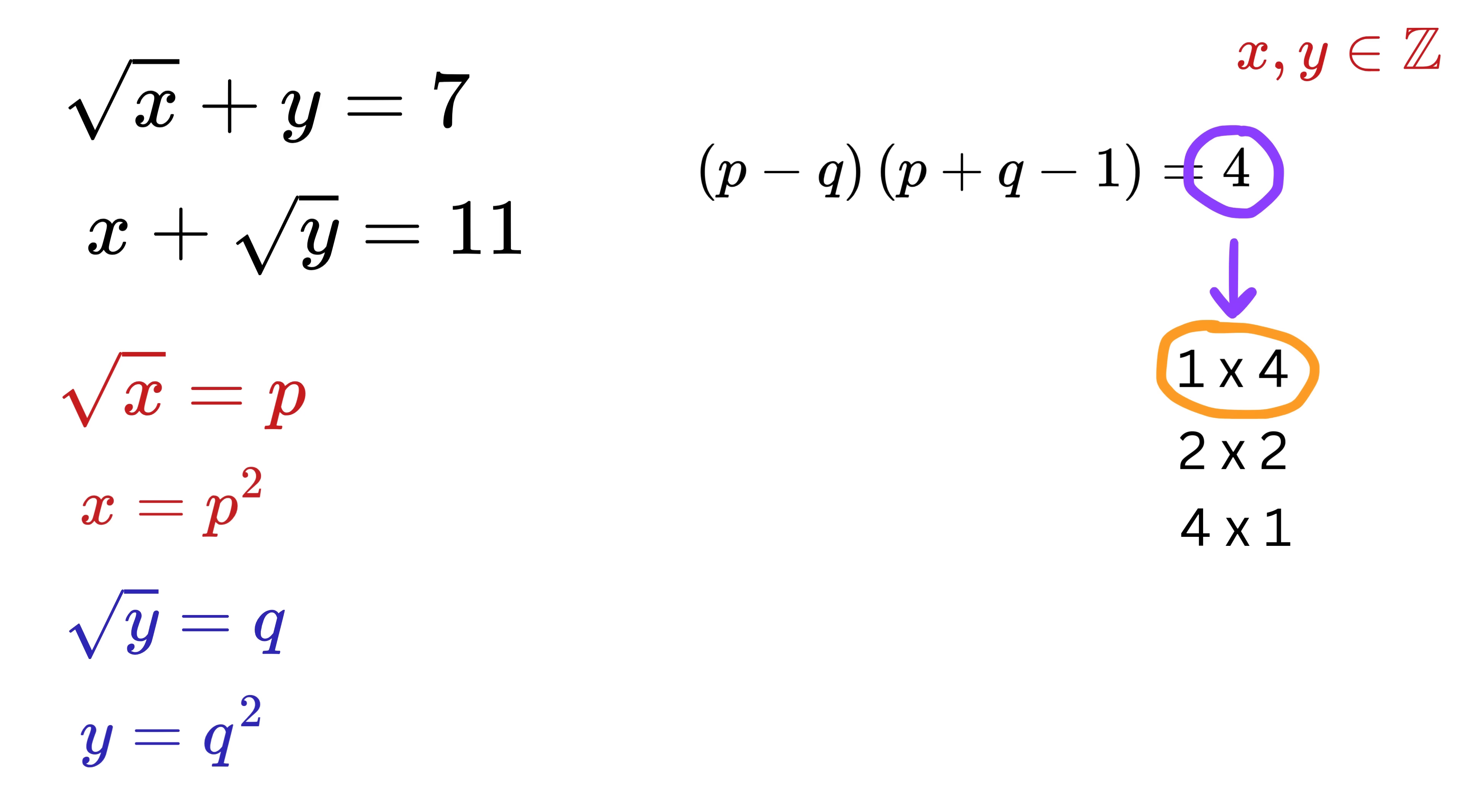So consider this part here: in this product, this is an integer and this is also an integer since x and y are integers. So we get p minus q equals 1 and p plus q minus 1 equals 4, or p plus q equals 5. Add both of them to get 2p equals 6, or p equals 3, and from here we get q equals 2. This means x is 3² or 9, and y is 2² or 4.